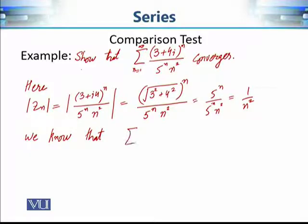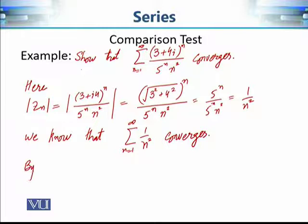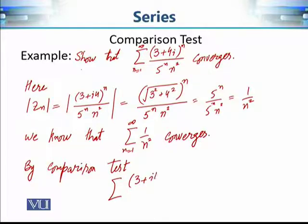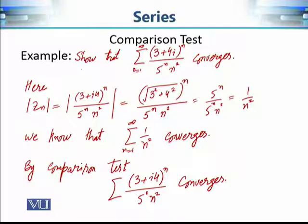We know from real analysis that the series with terms 1/n², for n = 1 to infinity, is a convergent series of real numbers. Since |zₙ| = 1/n² and the series Σ 1/n² converges, by the comparison test our given series of complex numbers is a convergent series. That is how simply the comparison test can be applied.